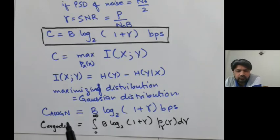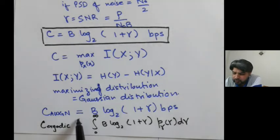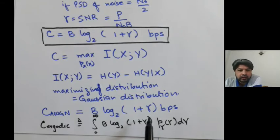And we will come back to this. This would be capacity that if gamma has a distribution, that you compute the capacity, the stochastic capacity, by averaging out over the distribution of the gamma.